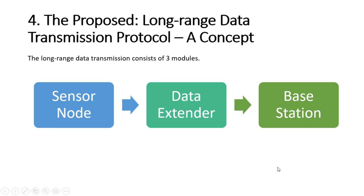The proposed RF long-range data transmission system consists of three parts: sensor node, data extender, and base station. Each part is equipped with the transceiver RF XBee Pro module, which can be configured as a transmitter and receiver. The operating range of each XBee Pro RF module is estimated at around 3.2 km for line-of-sight communication outdoors. Theoretically, values from the sensor nodes can be extended by adding extender nodes every 3.2 km. However, uneven terrain in Sungai Tembeling may limit the signal strength, so the range and number of data extender modules may vary.